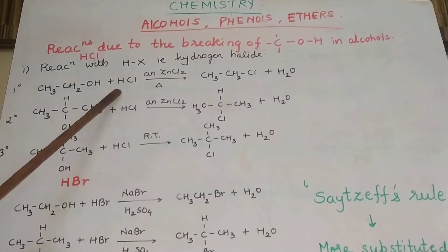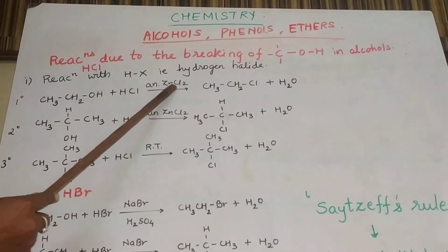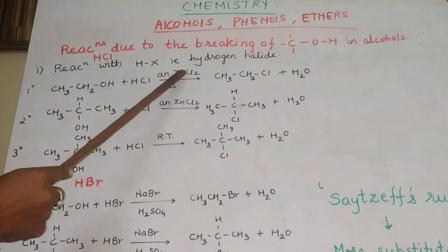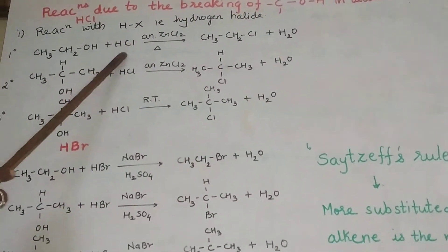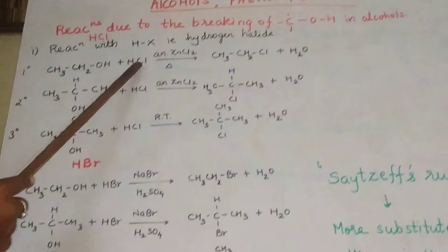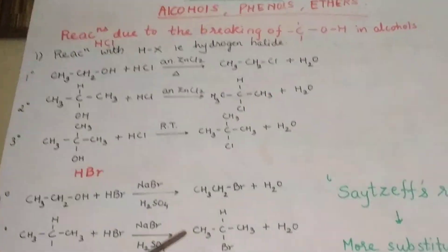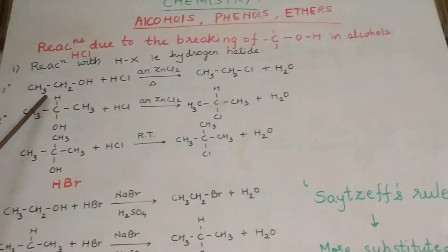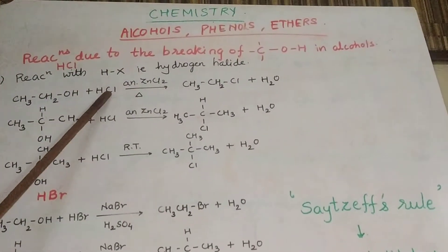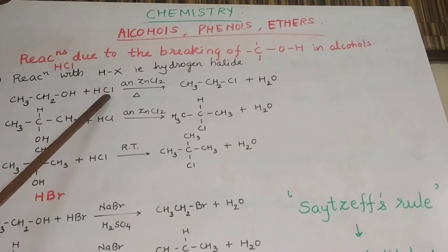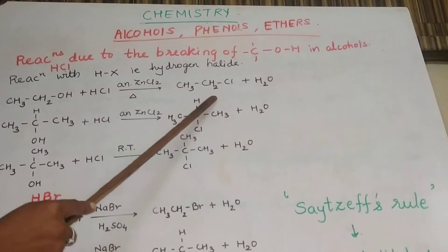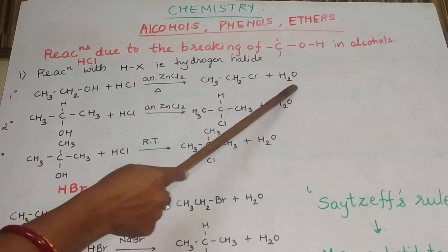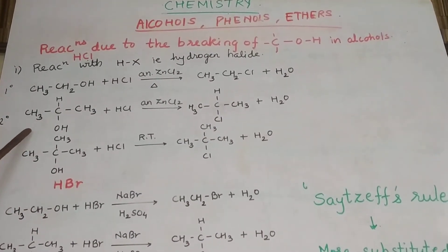Whenever we are using HCl, you require anhydrous ZnCl2. The mixture of HCl and ZnCl2 is called Lucas reagent. So a primary alcohol — ethanol — when treated with Lucas reagent, OH is replaced by Cl and you get formation of an alkyl halide called chloroethane along with H2O.